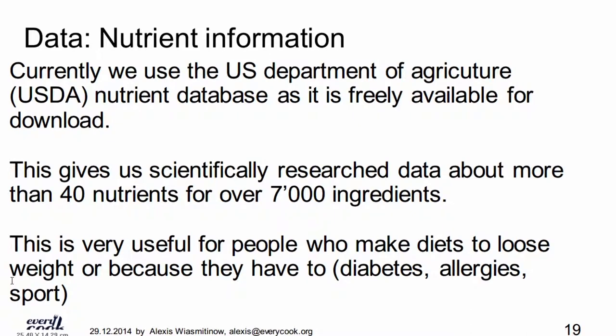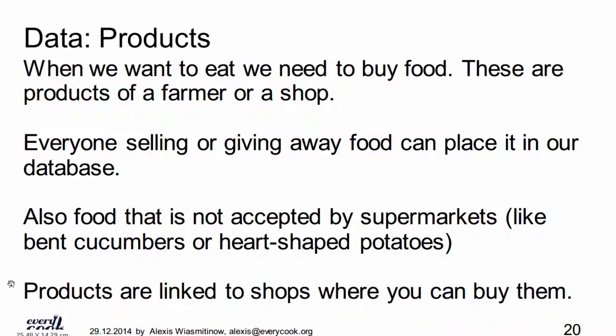For nutritional data we use the US database; Switzerland has also published a database, and nearly every country has its own database. Of course they all have different formats, which makes it difficult to bring them together, but we work with the US data. For products, we want to have all products possible — from the local farmer to the large supermarket — because different people have different needs. Maybe you just need cheap food. And we also want to add food that's not accepted by supermarkets; people who have too much food can feed it into our database and give it away, because it's more useful to find someone who wants to cook it than to throw it away.